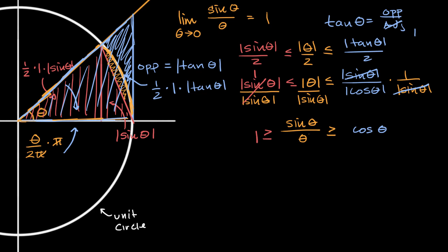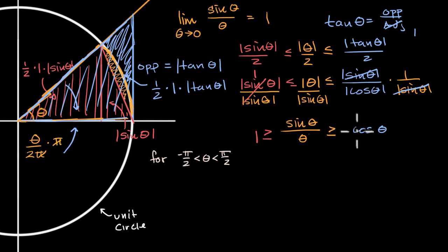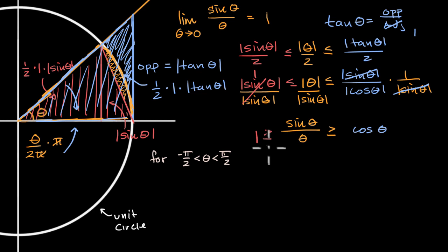We have set up three functions over the interval where negative pi/2 < θ < pi/2. Sine of theta over theta is defined over this interval except where theta equals zero. Since we're defined everywhere else, we can now apply the squeeze theorem — also called the sandwich theorem — to find the limit.